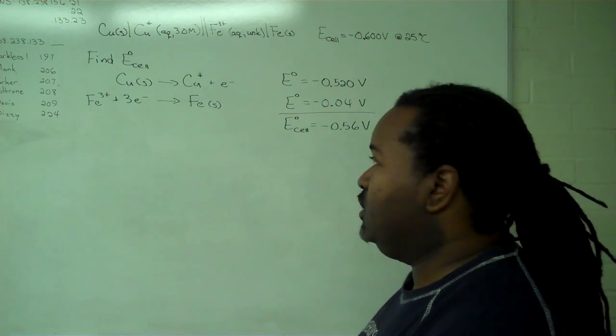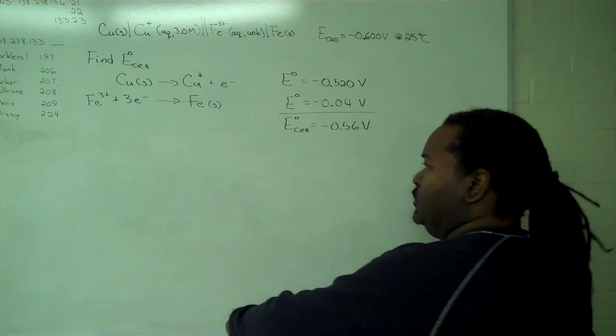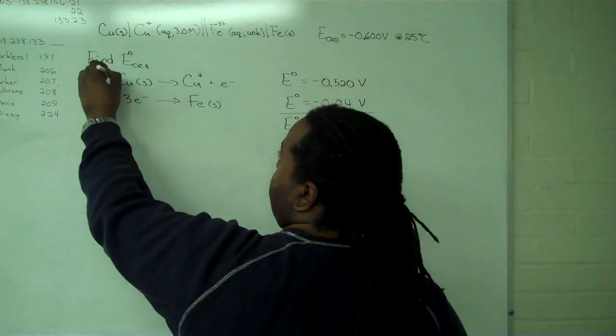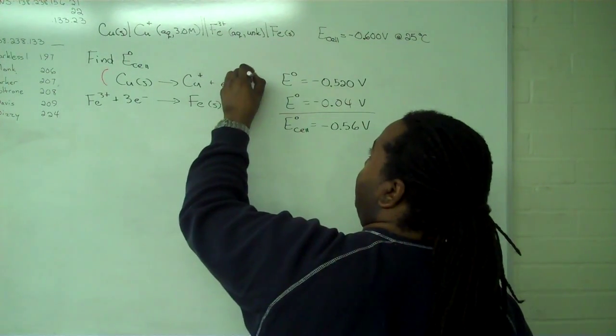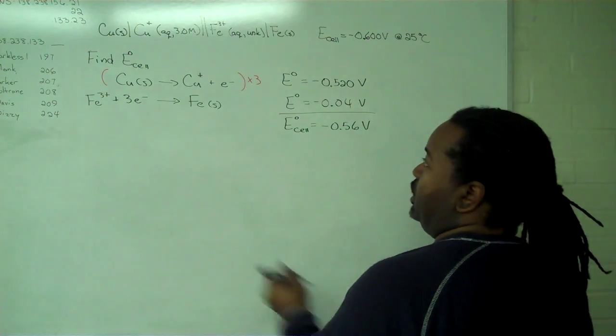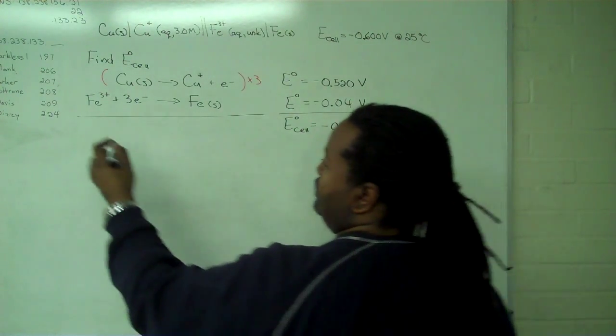So the next step then is to determine the expression for Q. For that, we will need to recognize that we must multiply by 3 our copper reaction. And when we do that, we're able to cancel 3 electrons.